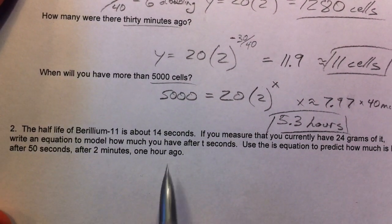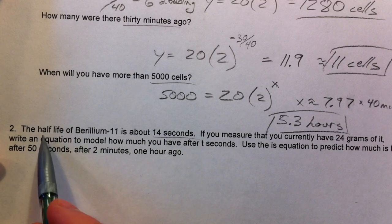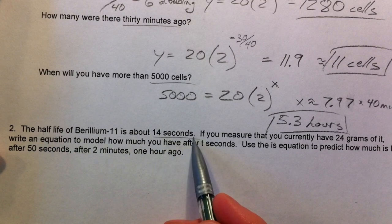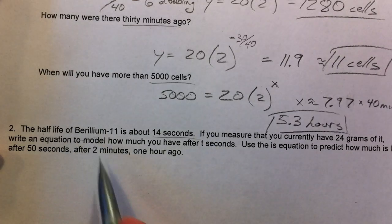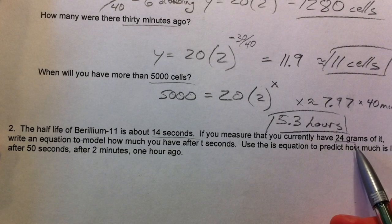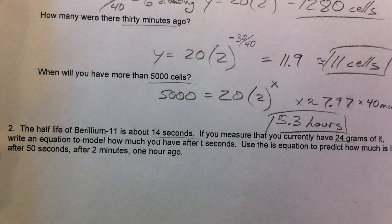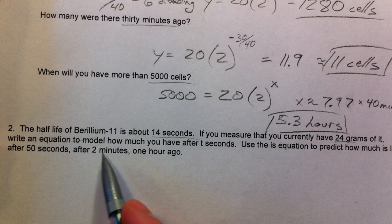Alright, the half-life of Beryllium is about 14 seconds. What we mean by half-life is that every 14 seconds, only half of this stuff is left. So if you measure that you currently have 24 grams, in 14 seconds you're only going to have 12 grams because only half of it's going to be left. So let's write an equation to model how much you have after t seconds.